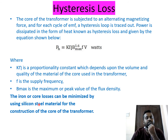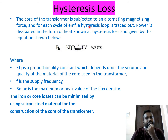Hysteresis losses can be minimized by using silicon steel material for the construction of the transformer core, because there is power dissipated as heat whenever the core is subjected to an alternating magnetizing force.